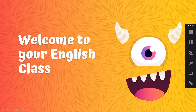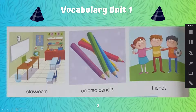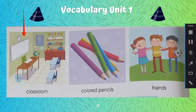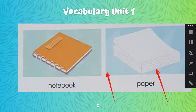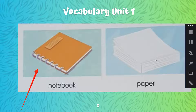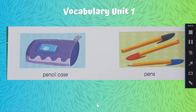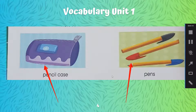So we are going to review what we saw last week. Vamos a ver qué vimos la semana pasada porque se nos pudo haber olvidado. The vocabulary from unit number one. Estamos viendo el vocabulario de la unidad número uno. And we were talking about our classroom, our colored pencils, our friends, our notebook and paper, our pencil case and our pens. Son los elementos que ocupamos en el salón de clases. Esta vocabulario se encuentra en la página número 98.